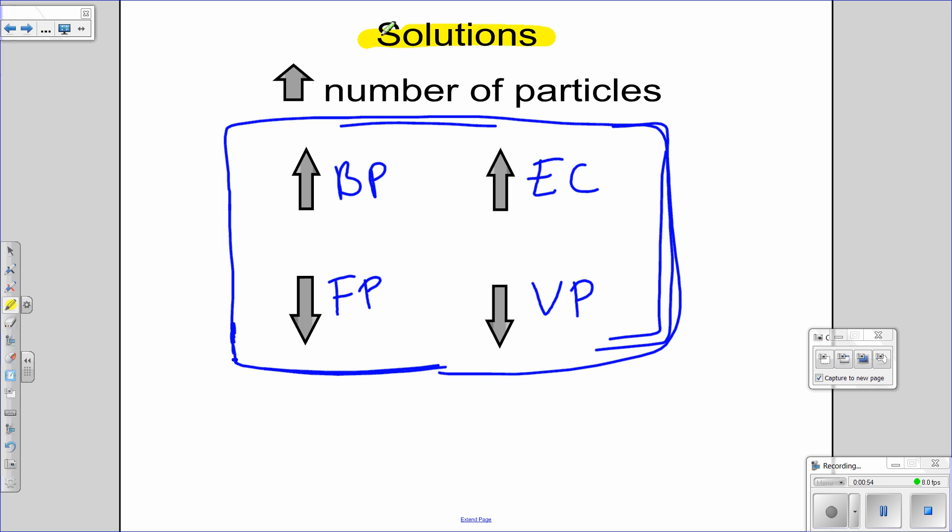Next thing is solutions. Remember, if it's a solution, something is dissolved in there. What does that mean? The number one thing is that it's going to impact the properties or the magnitude by the number of particles. The greater the number of particles means the higher the boiling point, the higher the electrical conductivity. First thing you've got to check is that the thing is an electrolyte, which means it breaks apart and forms ions in water. So those two things increase with the number of particles. The two that decrease with the number of particles is freezing point and vapor pressure decrease as you increase the number of particles.